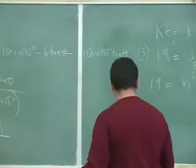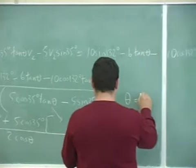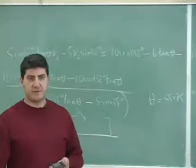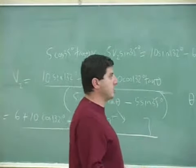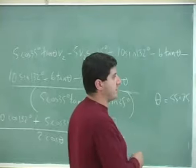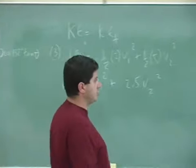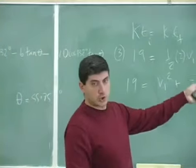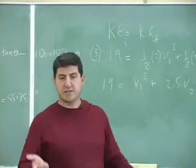So the answer I got, 55.75 degrees. Well, once you get that, the rest of it follows through. Because once you get the theta, then you can put it into the equation for V1. You can solve for V1, and then you can solve for V2. After that, it's easier.